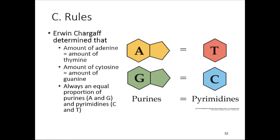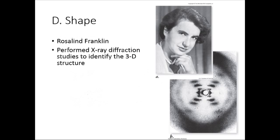Erwin Chargaff did his experiment and found that the number of adenine and thymine bases were the same, and guanine and cytosine were the same, in whatever DNA molecule he found. So A and T were equal, and G and C were equal — and that's how we came up with the base pairing model.